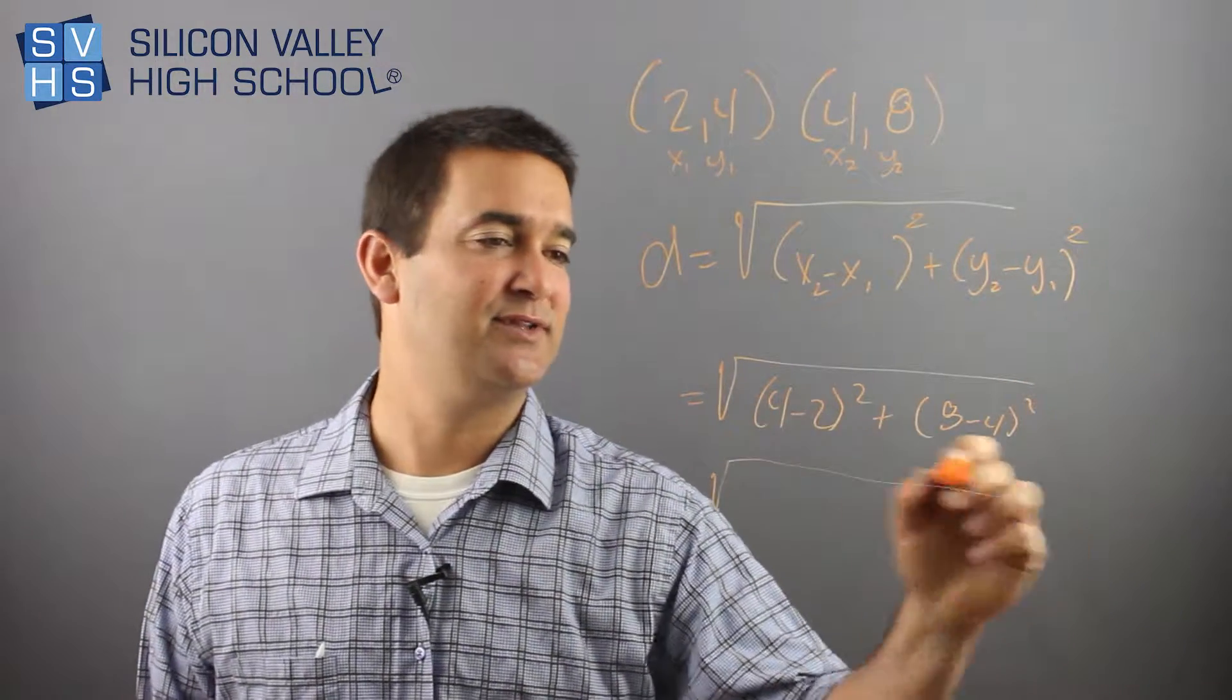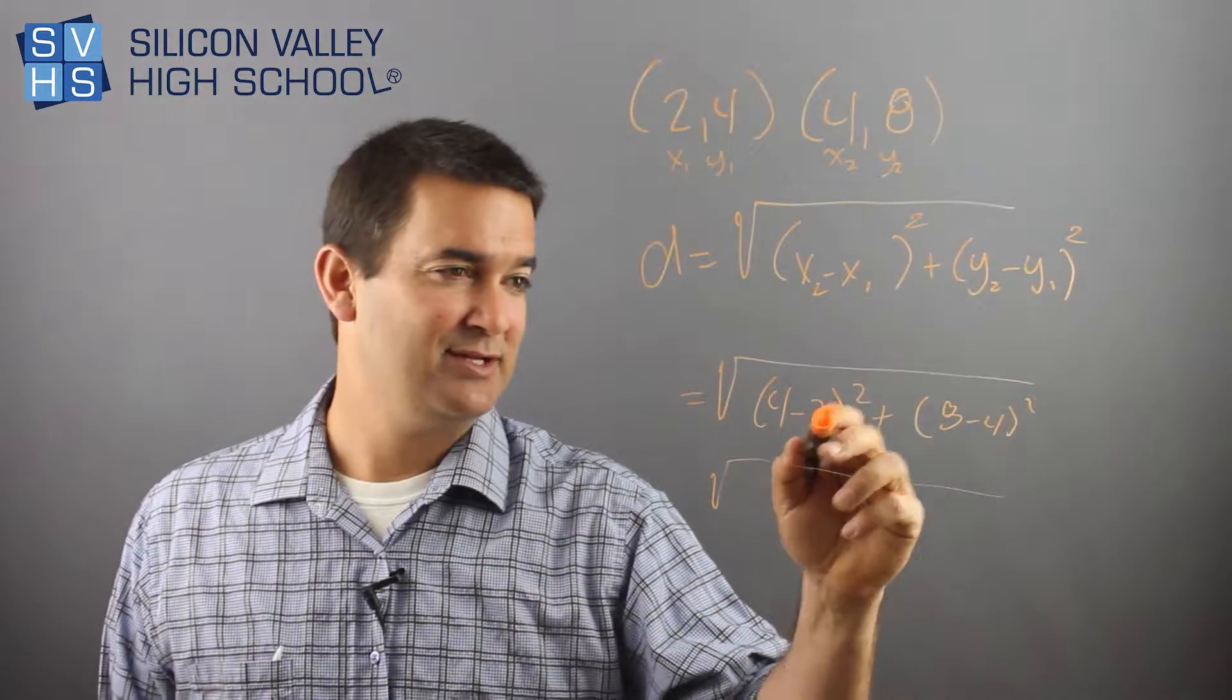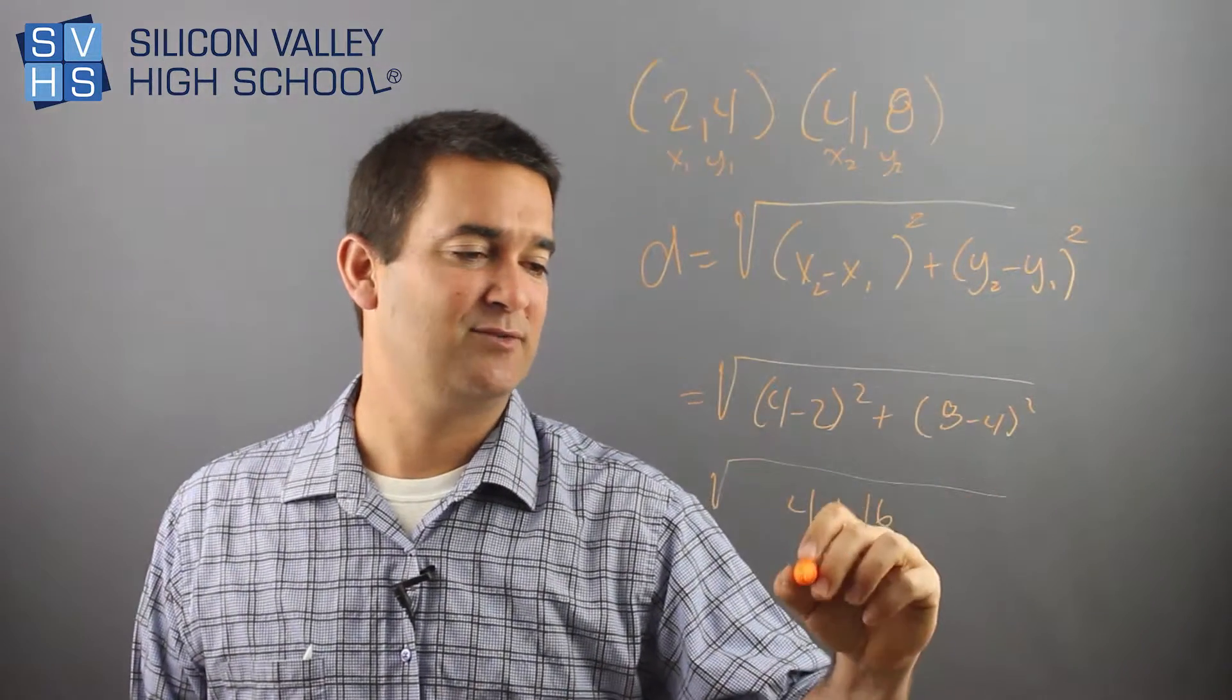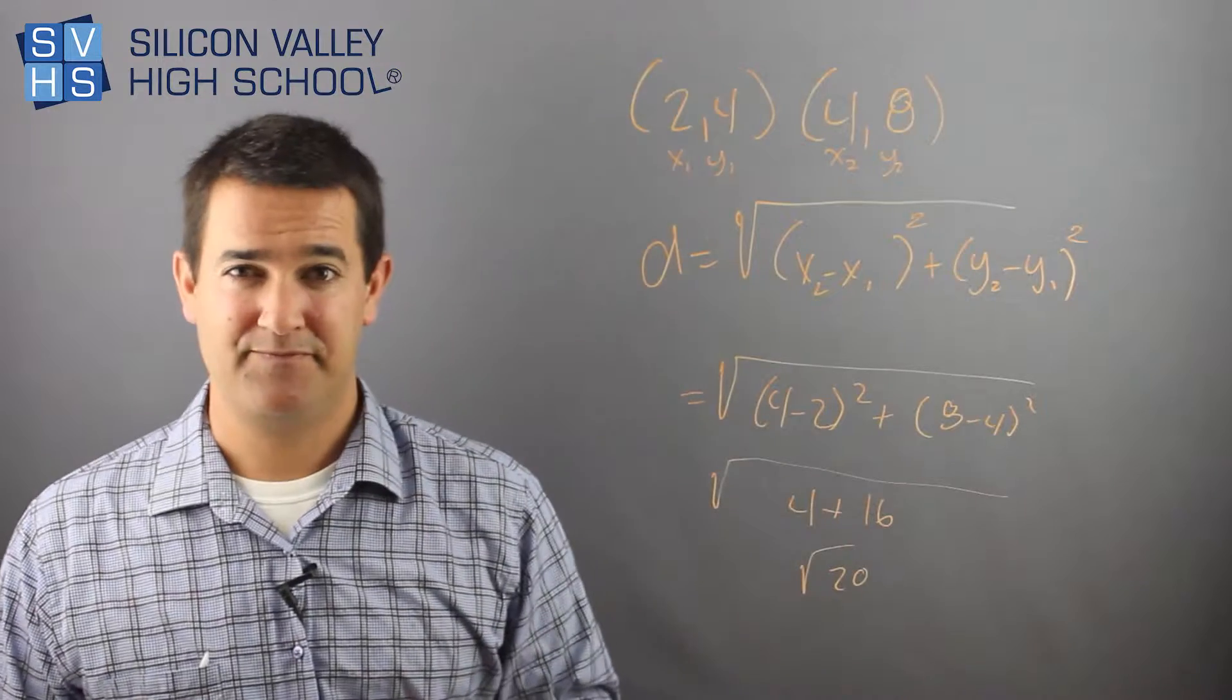Which would give you root, so this looks like 4 minus 2 is 2, 2 squared is 4 plus 8 minus 4 is 4, 4 squared is 16. This would be the root of 20.